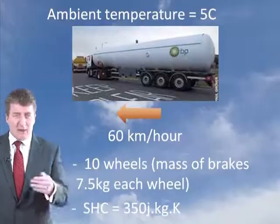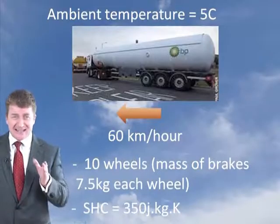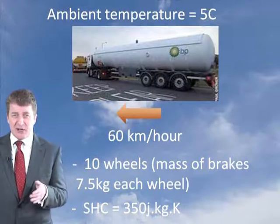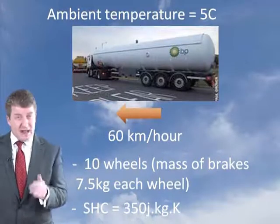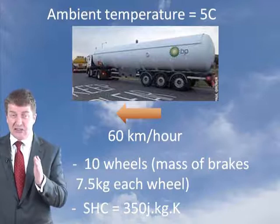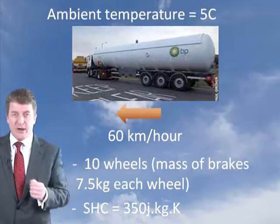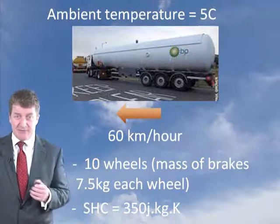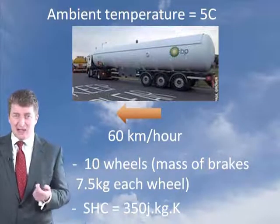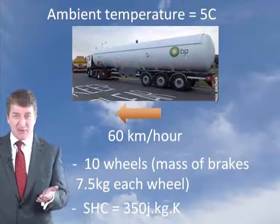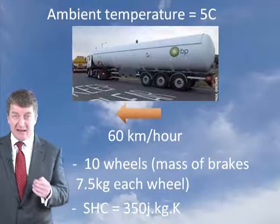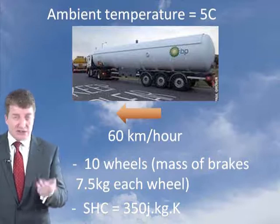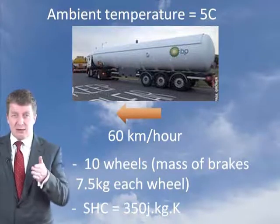Let's do an example of this. A petrol tanker with a mass of 16 tonnes, fully laden, is travelling at 60 kilometres an hour on level ground. The tanker carries out an emergency stop. How hot will the brakes be? The mass of the brakes on each wheel is 7.5 kilograms and the vehicle has 10 wheels. The outside ambient temperature is 5 degrees C, and the specific heat capacity of the metal brakes is 350 joules per kilogram per kelvin.